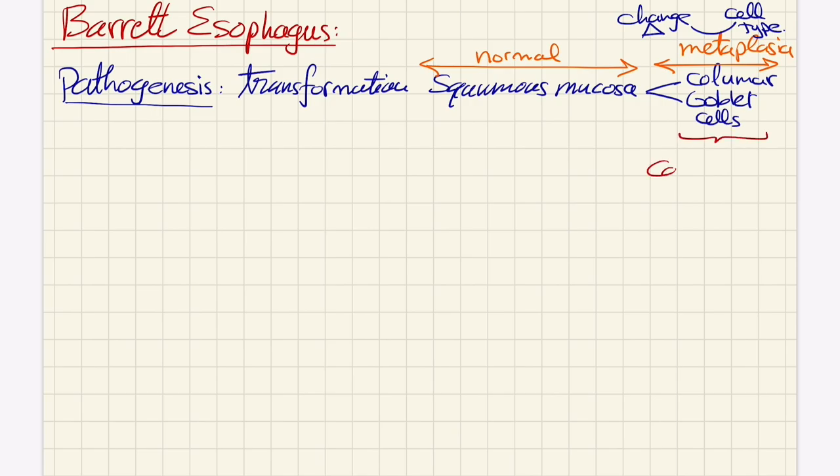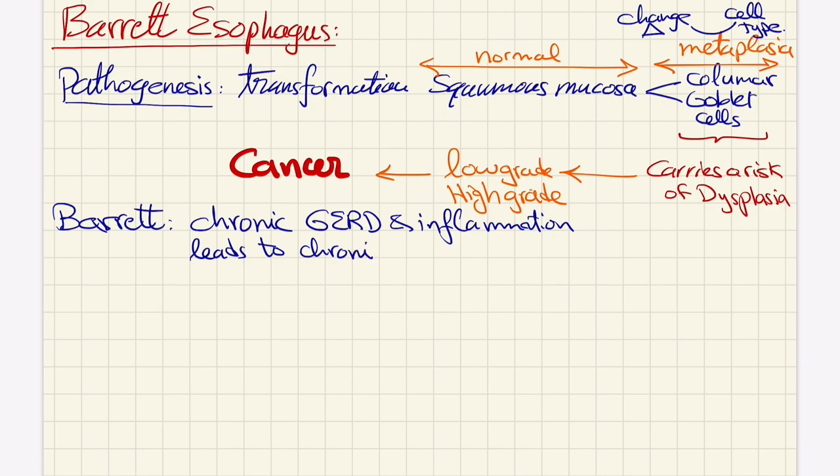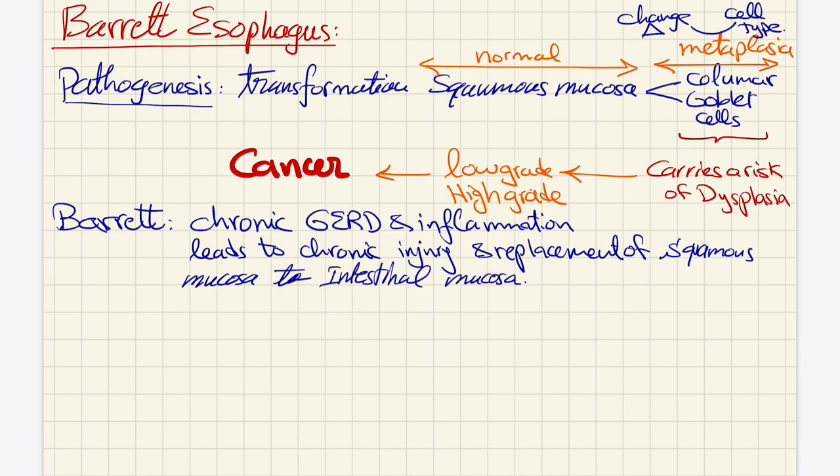The columnar and goblet cells are seen in the intestines. This is the definition of metaplasia - a change of cell type. This metaplasia in the esophagus carries a risk of dysplasia, which is the same type of cell but a bad version - a premalignant lesion. We have two types: low-grade dysplasia and high-grade dysplasia. Barrett's is caused by chronic GERD inflammation causing transformation of squamous cells into intestinal mucosa. To make the diagnosis, we need a tissue sample and biopsy.